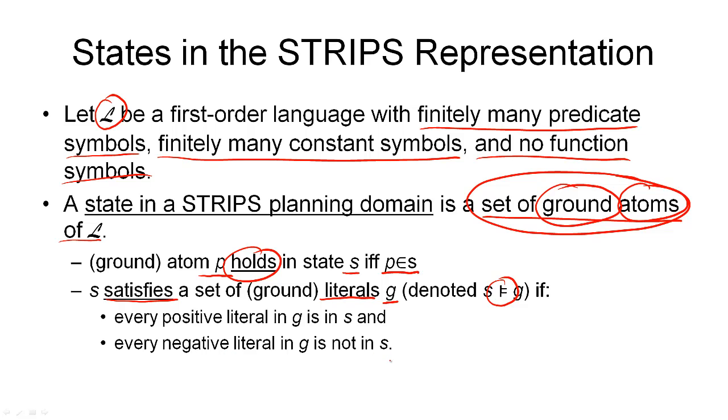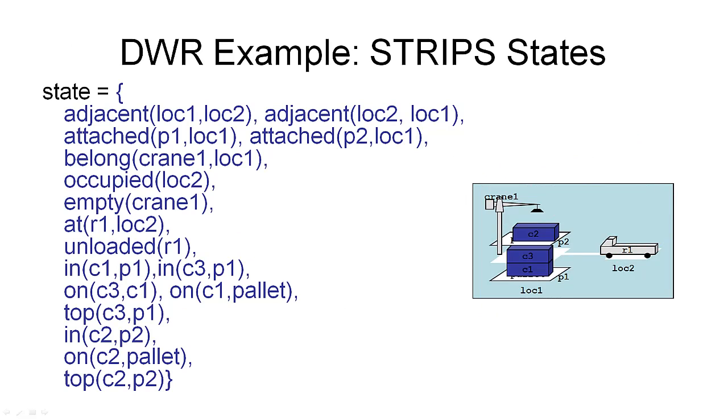Let's illustrate this with an example. Depicted here is a state in the dock walker robot domain. I hope you all intuitively understand what's going on in this picture. But for our planner, we need to translate this state into our formal representation in the STRIPS representation. This means we need to define the set of ground atoms that hold in this state. We can do this by going through the relations individually or in some other order.